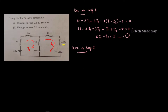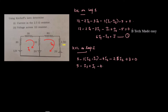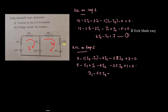If we apply loop 2, this is the equation: 5 minus 1 into i2 minus i1, minus 4i2, minus 2.5i2, plus 3 is equal to 0. This means the negative and positive. So 5 minus i2 plus i1 minus 4i2 minus 2.5i2 plus 3 equals 0. This gives i1 minus 7.5i2 equals minus 8.